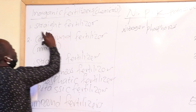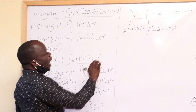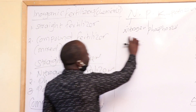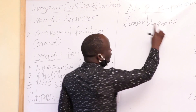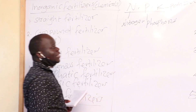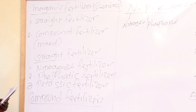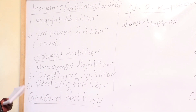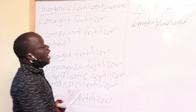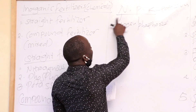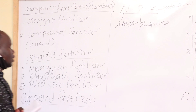Straight fertilizers have only one of these macronutrients — either nitrogen, phosphorus, or potassium. They cannot have both or all of them; only one. But compound fertilizers have a compound of these; they can have two or all of them.